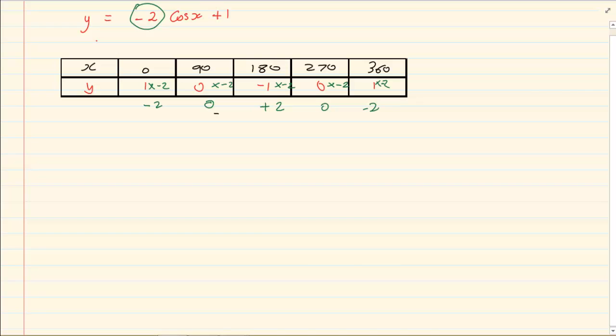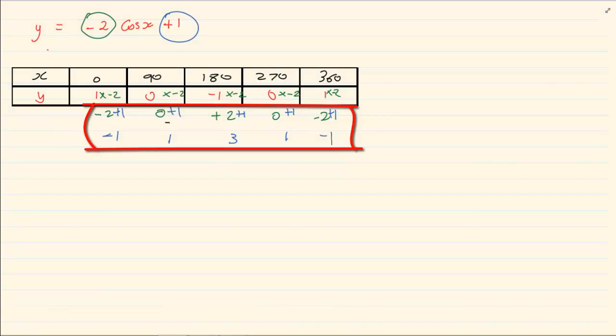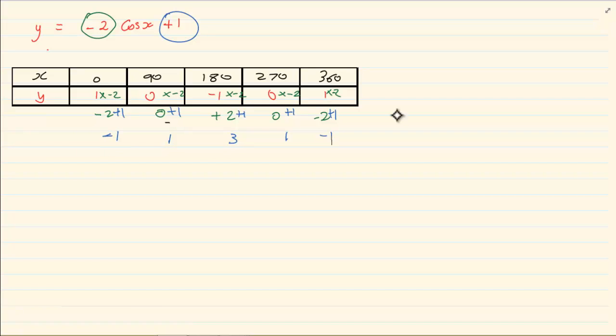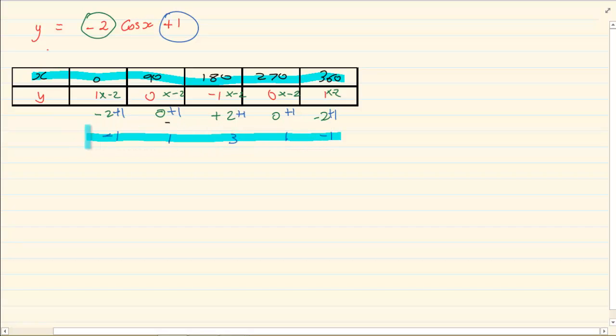Now after that I am going to add my 1. Minus 2 plus 1 is minus 1. 0 plus 1 is 1, 2 plus 1 is 3, 0 plus 1 is 1, minus 2 plus 1 is minus 1. So our coordinates that we are plotting, remember our x value and our y value will be what we had added.